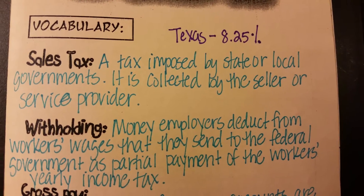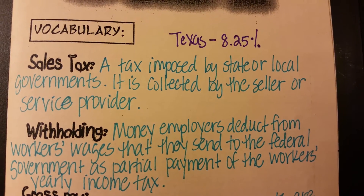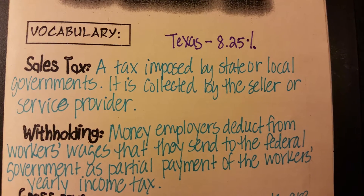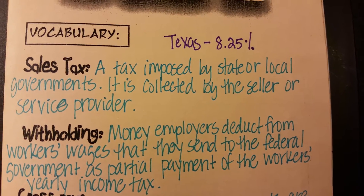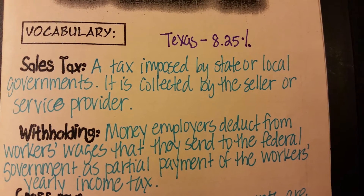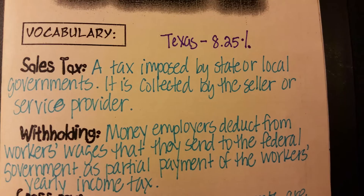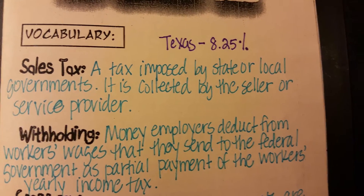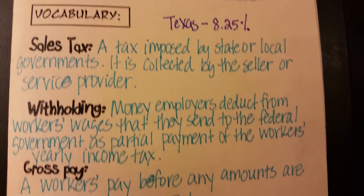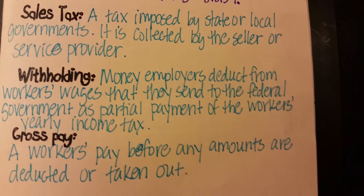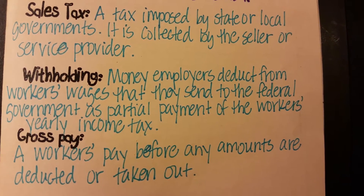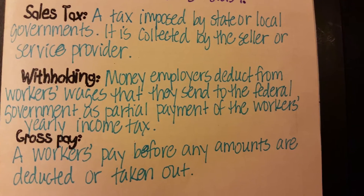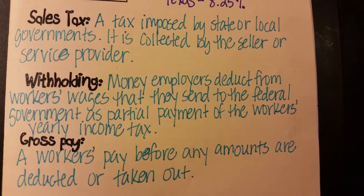Withholding is the money that the employers deduct from workers' wages that they send to the federal government as partial payment of the workers' yearly income tax. Anytime that we work, we do have to pay taxes on any money that we make. Your gross pay is a worker's pay before any amounts of deductions are taken out.